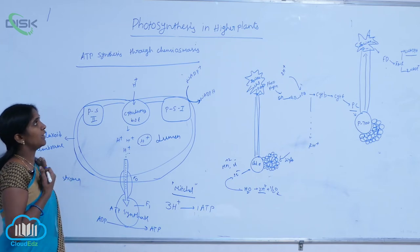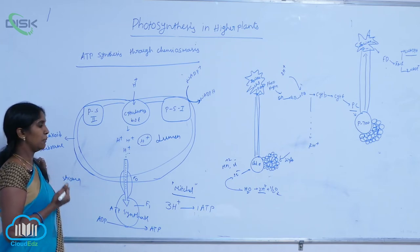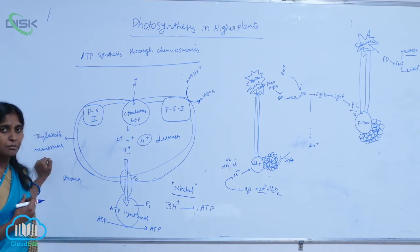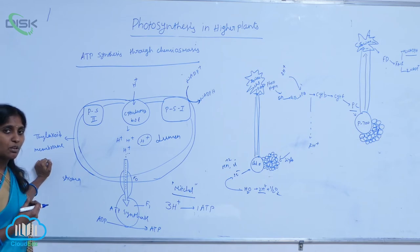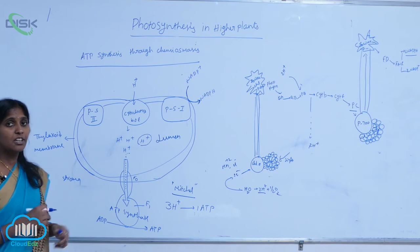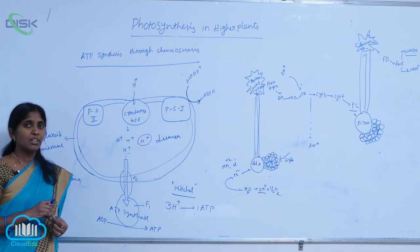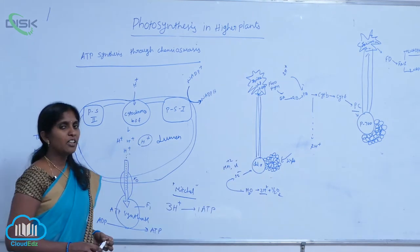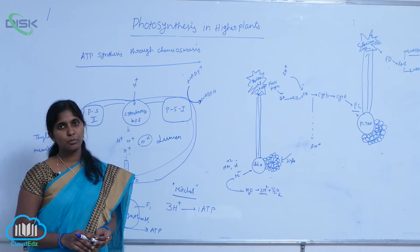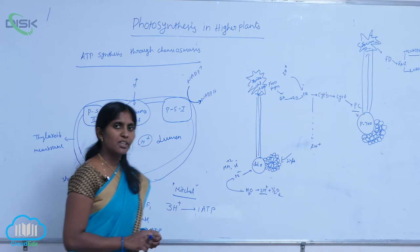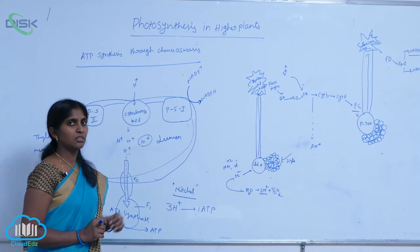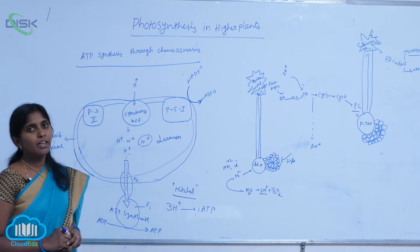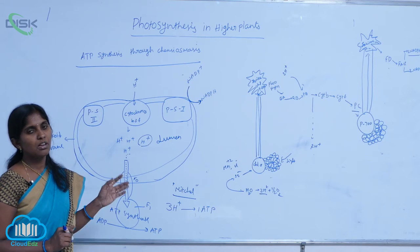This is completely explained in the chemiosmotic theory by scientist Mitchell. The same procedure occurs in the electron transport chain of mitochondria during oxidative phosphorylation, where protons are pumped from the inner membrane space to the matrix. In both cases — mitochondria and chloroplast — ATP is generated through the chemiosmotic hypothesis.